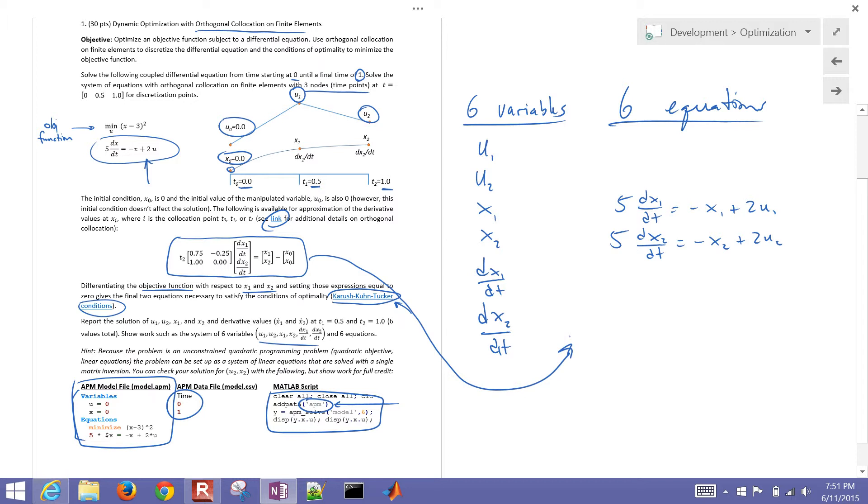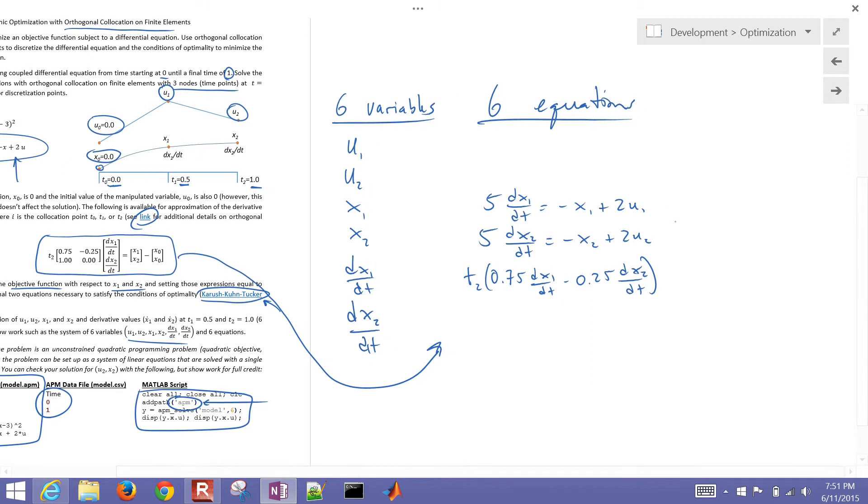Our next equation is going to be this collocation equation right here. This is what I think of for solving our differential equations, our differential terms. So if I set this up, I'm just going to write this out in non-matrix form. So I'm going to have 0.75 times dx1/dt minus 0.25 times dx2/dt. Okay, and then that is going to equal x1 minus x0. And then I'm going to have the same equation here but just next terms. Now this is going to be 0 times dx2/dt.